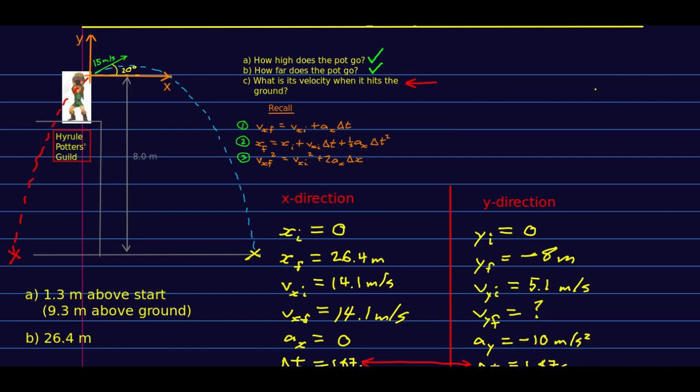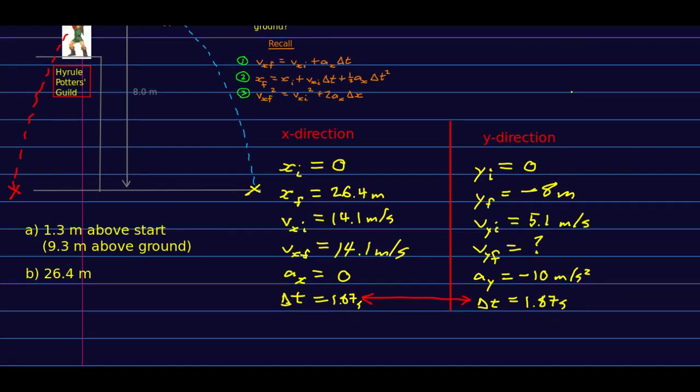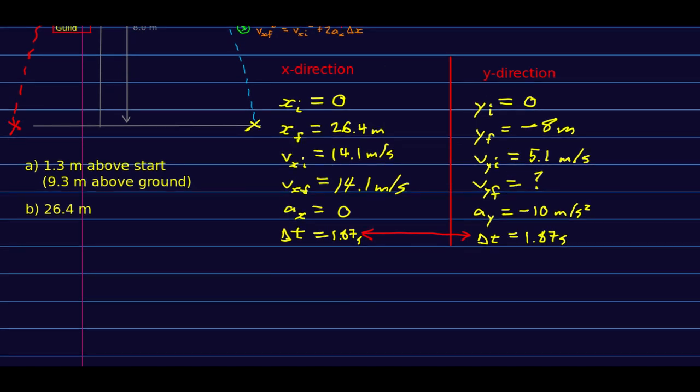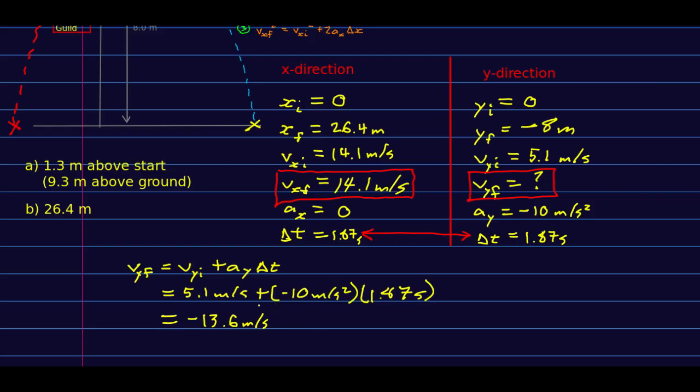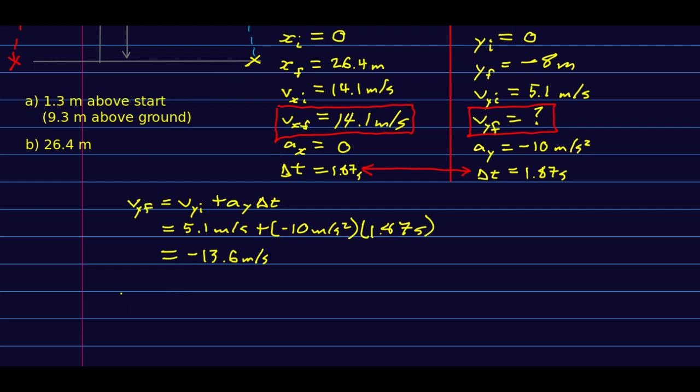Part c looks like it'll be a lot of work, but it turns out not to be at this point because of what we already know. One thing to notice is we already know one piece of the final velocity. There it is. Remember, we're talking about the same final as we were in part b, so everything here is the same, and so we're left just to find vyf, and that is going to be really easy because we can just say, okay, vyf is—this is our first equation—vyi plus ay delta t.